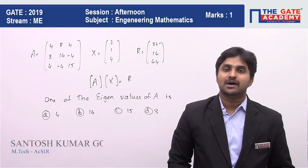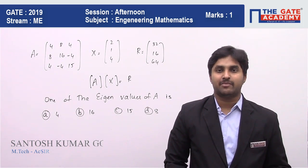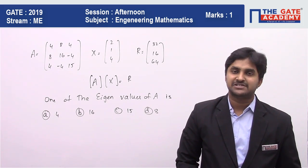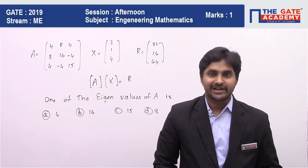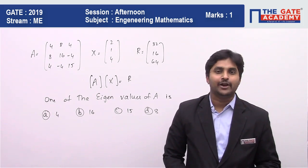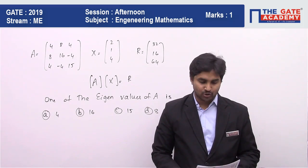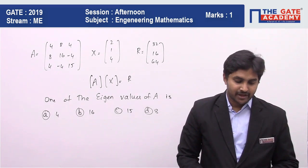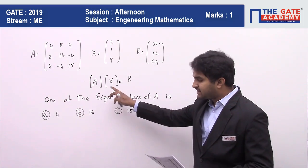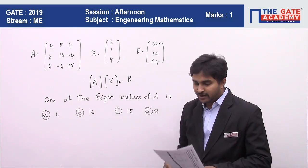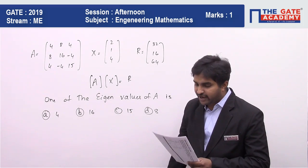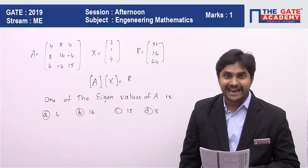Hello students, I'm Santosh. In this video we're going to discuss engineering mathematics from the chapter of linear algebra. First of all, let me read the question: in the matrix equation Ax = r, where A = [4, 8; 4, 8; 16, -4; 4, -4, 15],